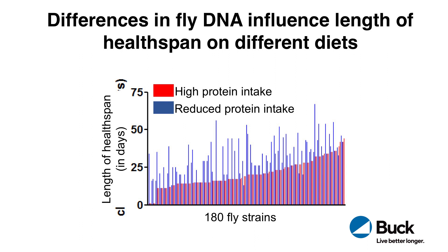What you can see here is that some strains on the high-protein diet, shown by the red bars, actually did very well, whereas on the left side of the graph there were many strains that did not do well on the high-protein diet. The same is true of the reduced protein intake — some strains performed really well and were healthy for most of their lives, while other strains performed much more poorly with the reduced protein intake.